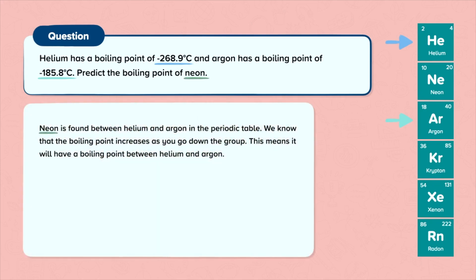Neon is found between helium and argon in the periodic table. We know that the boiling point increases as you go down the group. This means it will have a boiling point between helium and argon. So if we add the boiling points of helium and argon together and then divide them by two, we will get a figure that's in the middle of these two.